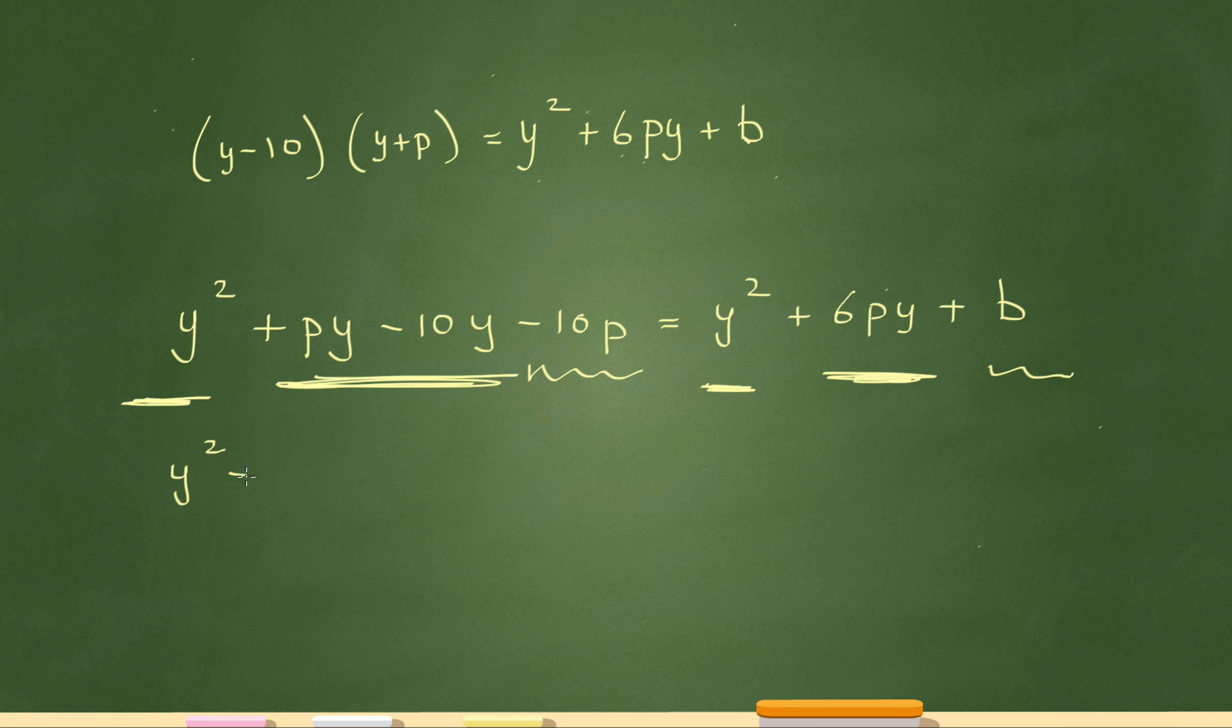So in other words, I'll set it up like this. Y squared has to equal y squared from this side and that side. py minus 10y must equal the 6py over here. And lastly, negative 10p must equal b. So let's see what I can do now.